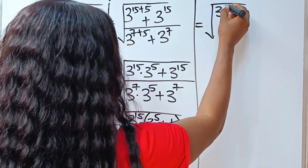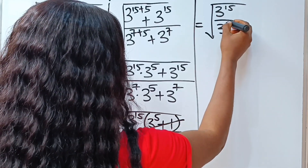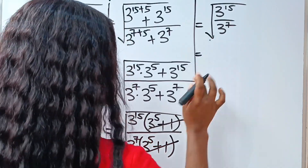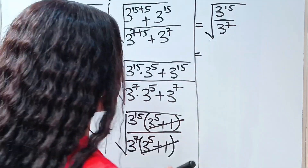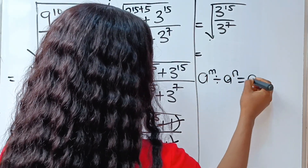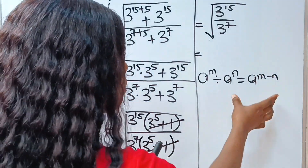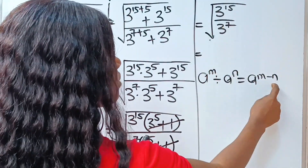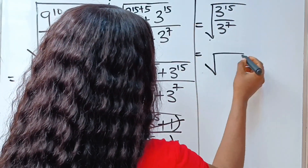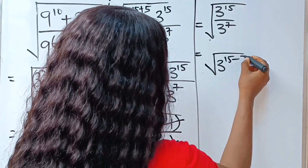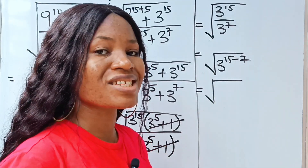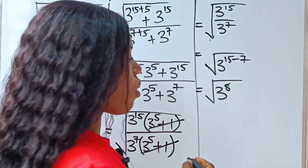What we have left is the square root of 3 to the power of 15 divided by 3 to the power of 7. Recall the law of exponents that says a to the power of m divided by a to the power of n is equal to a to the power of m minus n. Since the bases are the same, we subtract the powers: 15 minus 7 gives us 8. So it's 3 to the power of 8.